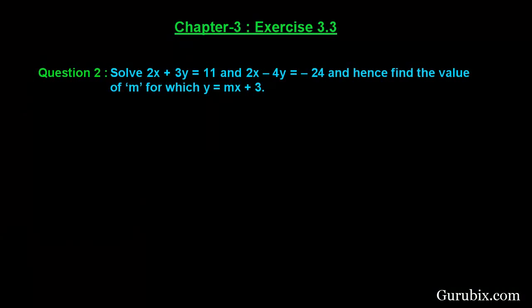Welcome friends. Let us solve question number 2 of exercise 3.3 of chapter 3. The question says: solve 2x plus 3y equals to 11, and 2x minus 4y equals to minus 24, and hence find the value of m for which y equals to mx plus 3. This is a very interesting and important question from an examination point of view. Let us see how to solve this question.